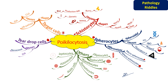Stomatocytes — in Greek, stoma means mouth. These are RBCs in which the central area appears slit-like on peripheral blood films. They are seen in liver disease, alcoholism, and occasionally in myelodysplastic syndrome. Sometimes they are artifactual, which happens because of decreased pH.